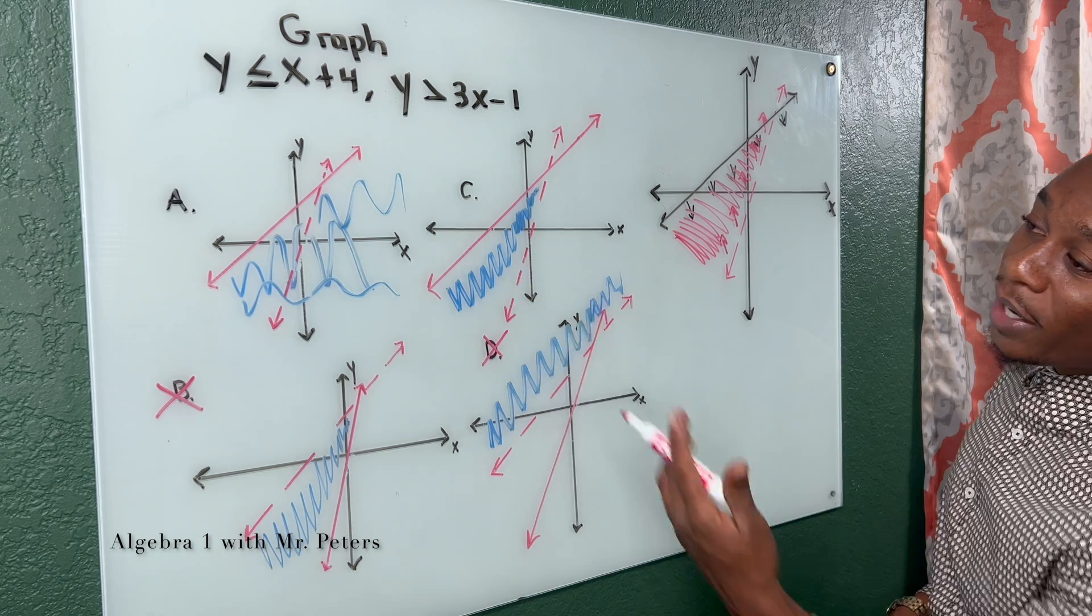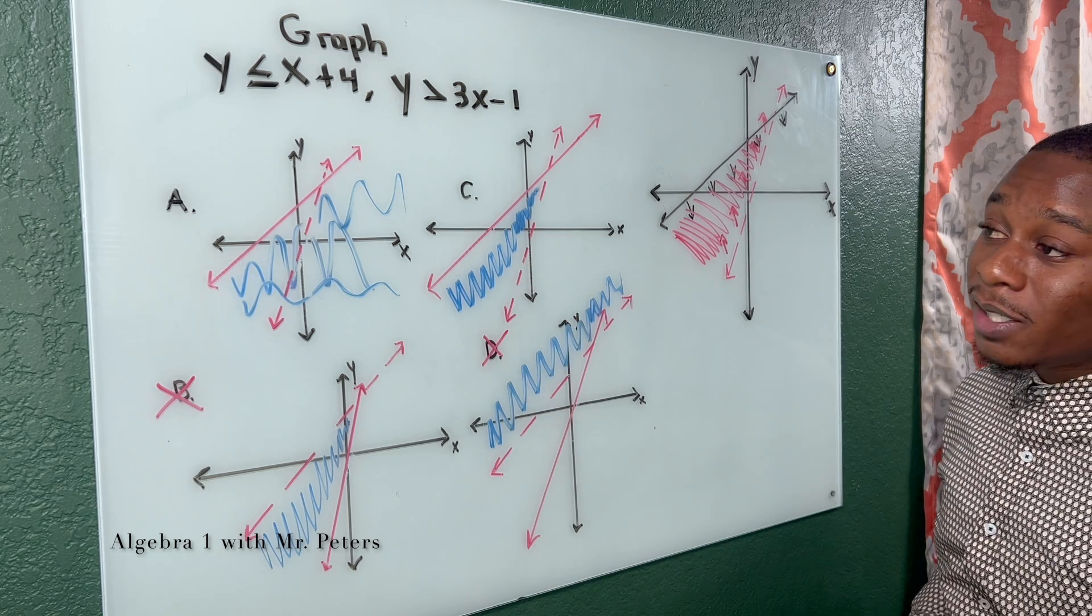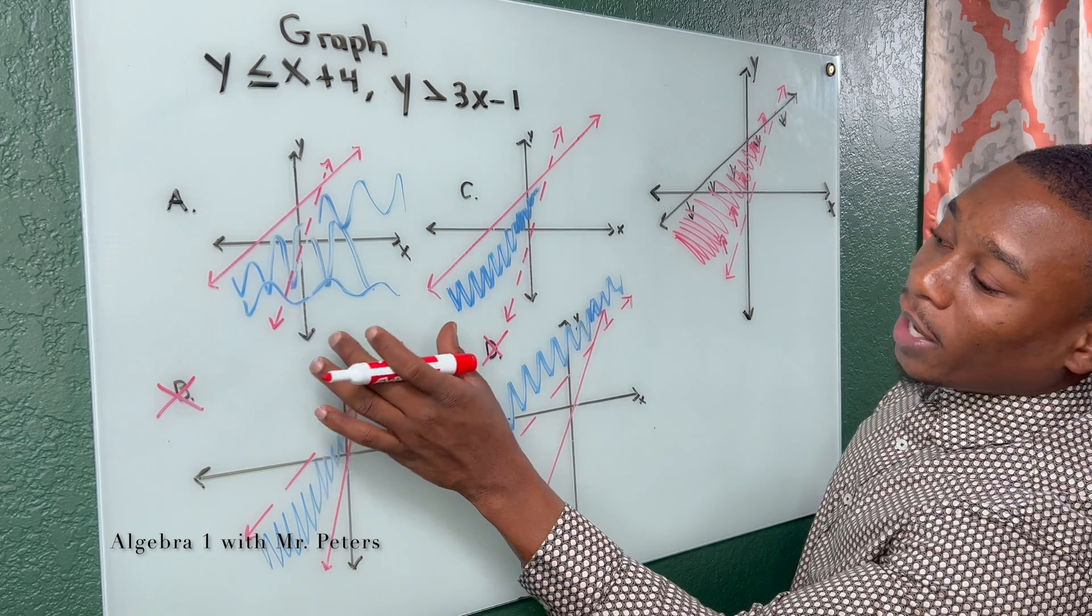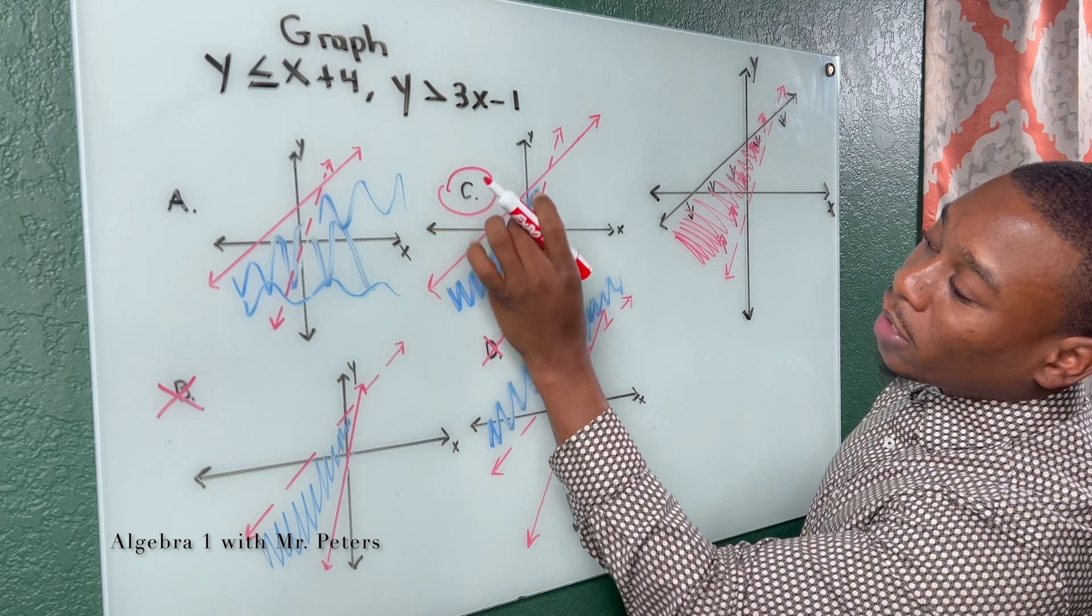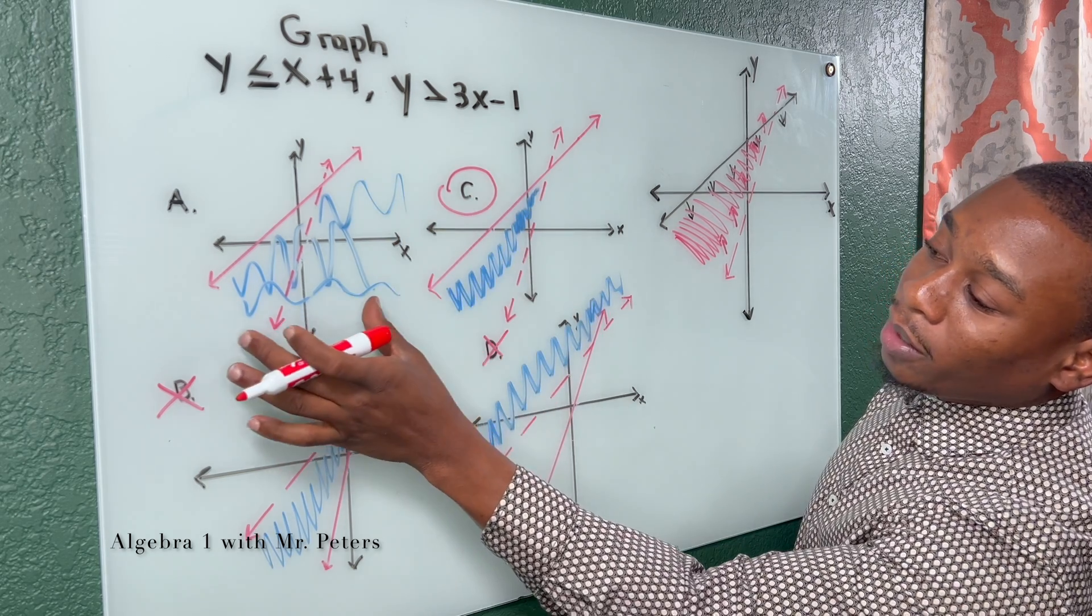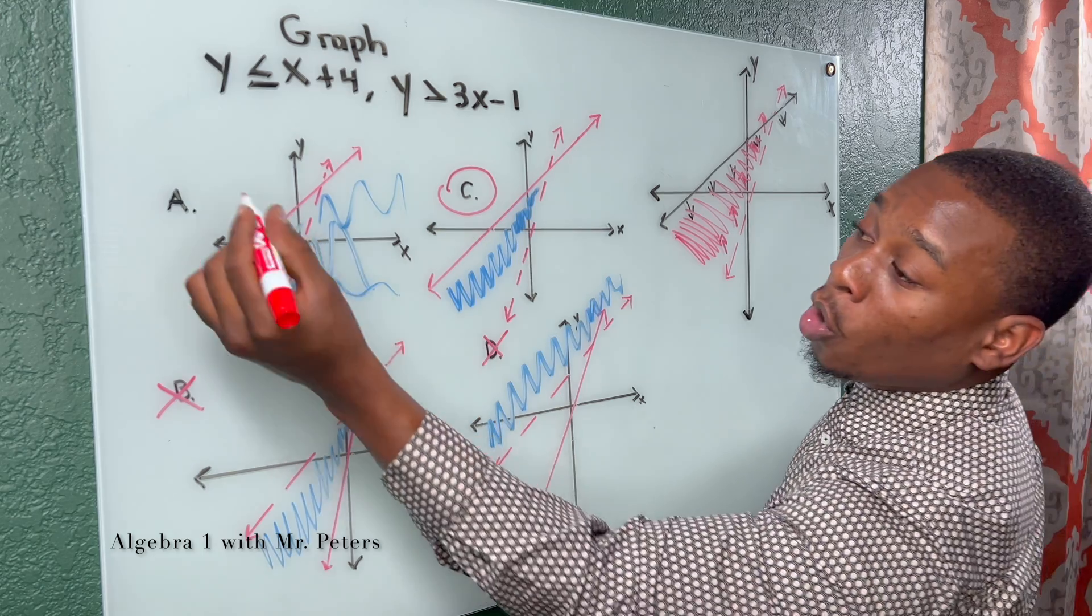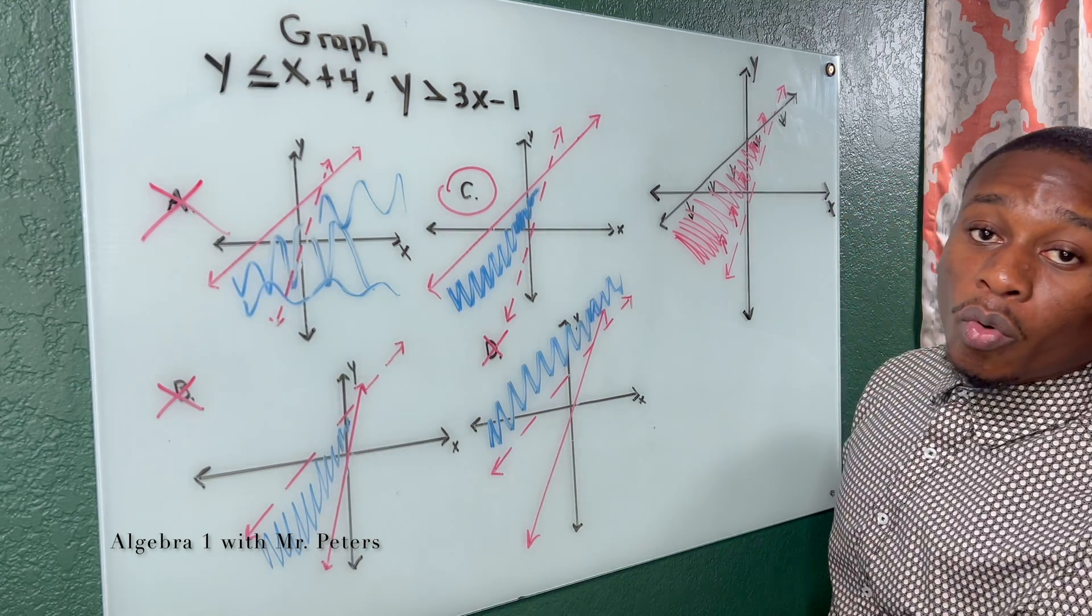So when we compare this back to our answer choices A and C, we know that it has to be C because only this section should be shaded. Anything outside of it, like an A, would be the incorrect answer.